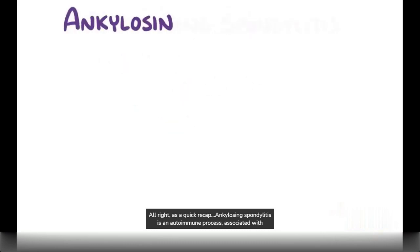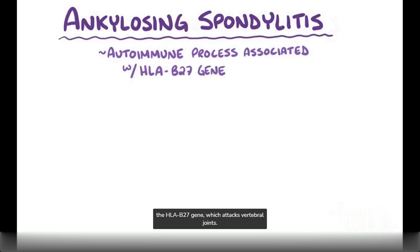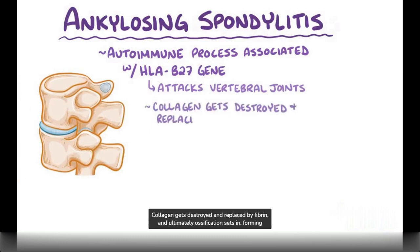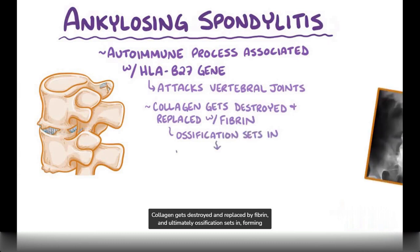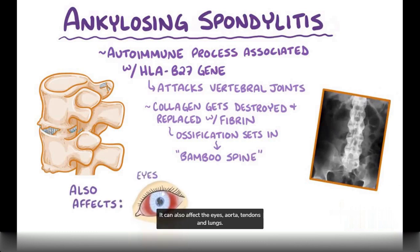Surgery can repair damaged hip and knee joints, but spinal surgery is typically considered risky and is rarely performed. As a quick recap, ankylosing spondylitis is an autoimmune process associated with the HLA-B27 gene, which attacks vertebral joints. In this process, collagen gets destroyed and replaced by fibrin, and ultimately ossification sets in, forming a bamboo spine on an x-ray or CT scan. It can also affect the eyes, aorta, tendons, and lungs.